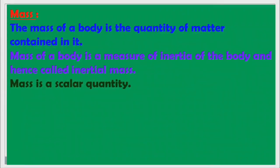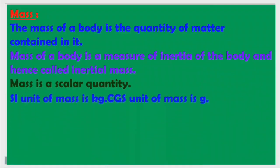Mass is a scalar quantity — it has only magnitude but no direction. The SI unit of mass is kilogram, and the CGS unit of mass is gram.